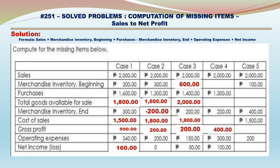Case 4: Gross Profit is 400 — Operating Expenses 300 plus Net Income 100. Cost of Sales equals 1,600 — Sales 2,000 minus Gross Profit 400. Total Goods Available for Sale equals 1,800 — Cost of Sales plus Merchandise Inventory Ending. Merchandise Inventory Beginning equals 500 — Total Goods Available for Sale 1,800 minus Purchases 1,300.